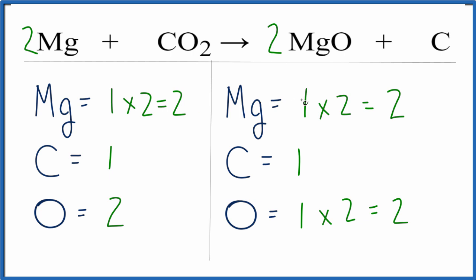And now the magnesium atoms are balanced, and we're done. This equation is balanced. So that's the balanced equation for magnesium plus carbon dioxide yields MgO plus carbon.